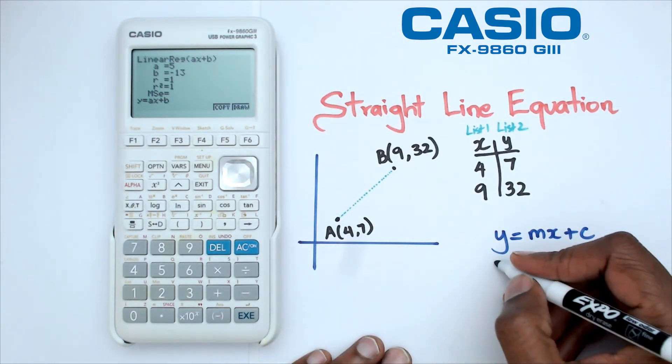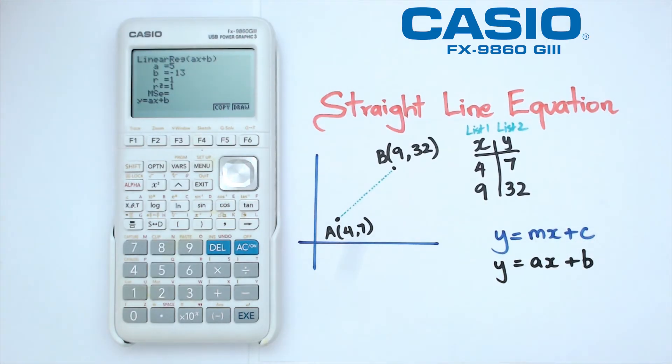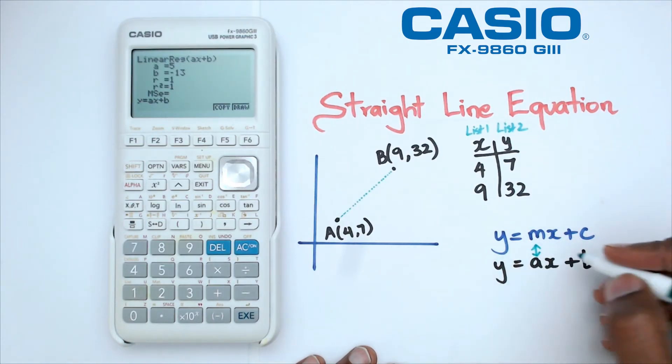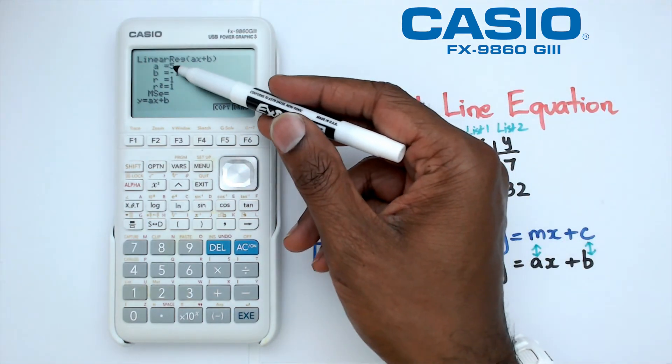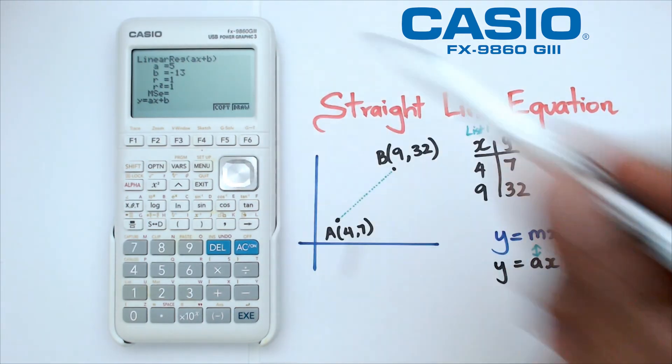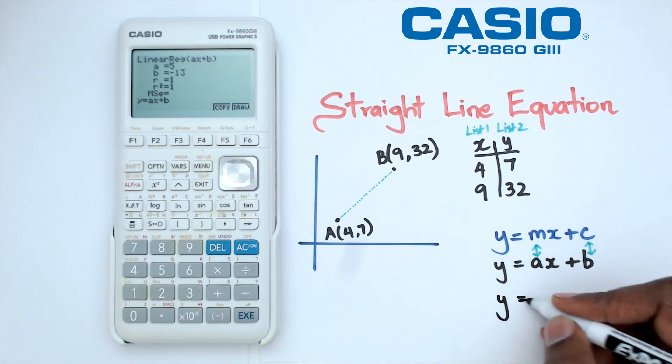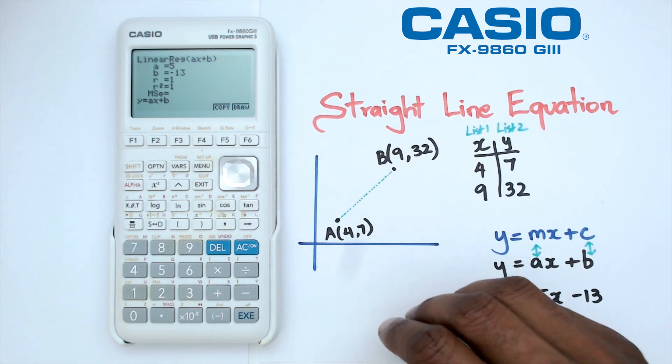Then it's just a matter of matching the values. If you look at it, the a value is the gradient and the B value is the y-intercept. If we have a look at the calculator, we're getting a equals 5 and B equals minus 13. So the equation for this particular straight line is Y equals 5X minus 13. And folks, that's just a quick little way to show you how to get a straight line equation given two points on this particular calculator.